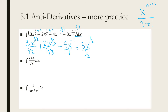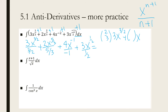Now when you simplify and you have fractions, it's like copy, change, flip — I am dividing by a fraction, so I'm going to flip the fraction and multiply it. I'm going to have 2/3 times 3x to the 3/2. Then I am going to have 3/5 times x to the 5/3. For the negative 1 on the bottom, 4x to the negative 1, I'm going to leave that for now. And plus 2 times 3x to the 1/2.